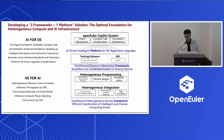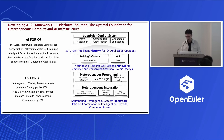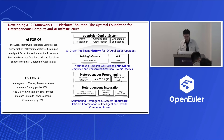OpenEuler will focus on two key areas: AI for OS and OS for AI. AI for OS refers to using AI to assist operating systems in complex tasks, scheduling, and intelligent performance optimization. We will offer an AI framework to help users better manage their operating systems.